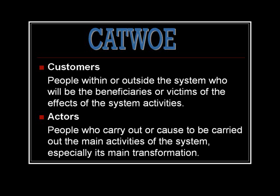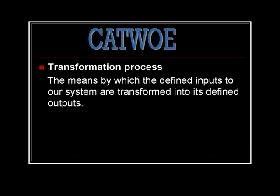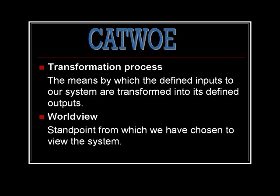Customers: people within or outside the system who will be the beneficiaries or victims of the effects of the system activities. For example, it can be the customer or employee in the company. Actors: people who carry out or cause to be carried out the main activities of the system, especially its main transformation. Transformation process: the means by which the defined inputs to a system are transformed into a defined output — that means input, process, and output.